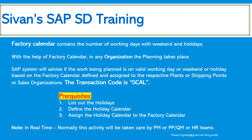Here we use the transaction code SCAL. In real time, normally this activity is performed by the PM consultants, PP/MM consultants, or their respective heads and teams. However, we must know where exactly this factory calendar is defined and how it is defined.